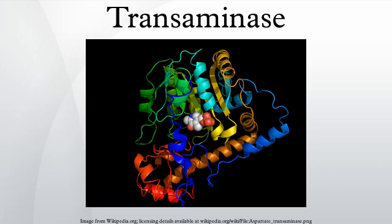Two important transaminase enzymes are AST and ALT. The presence of elevated transaminases can be an indicator of liver damage. This discovery was made by Fernando de Ritis, Mario Coltorti, and Giuseppe Giusti in 1955 at the University of Naples.